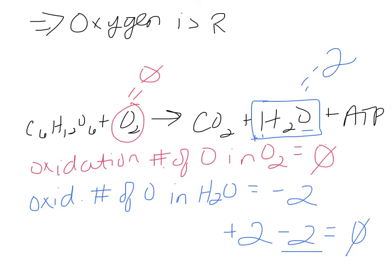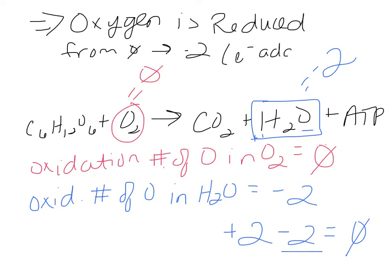Glycolysis is thought to be one of the oldest metabolic pathways, which is why you see it in both prokaryotes and eukaryotes. In the energy investment phase, you can see how the ATPs phosphorylate and split that glucose molecule into two three-carbon molecules. I've taken those two ATPs, phosphorylated the glucose, and split it in half.